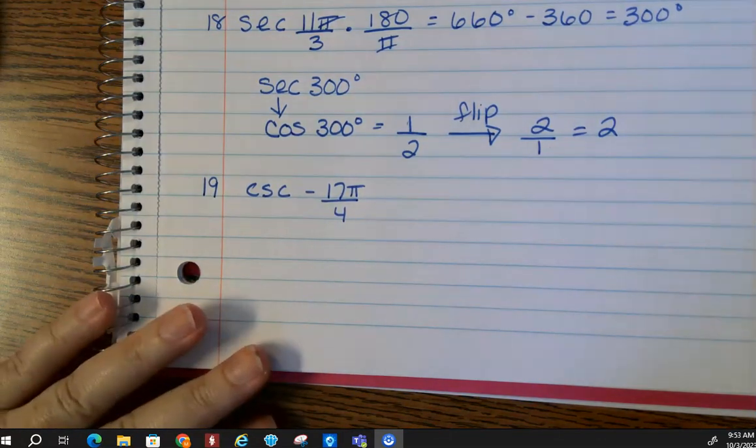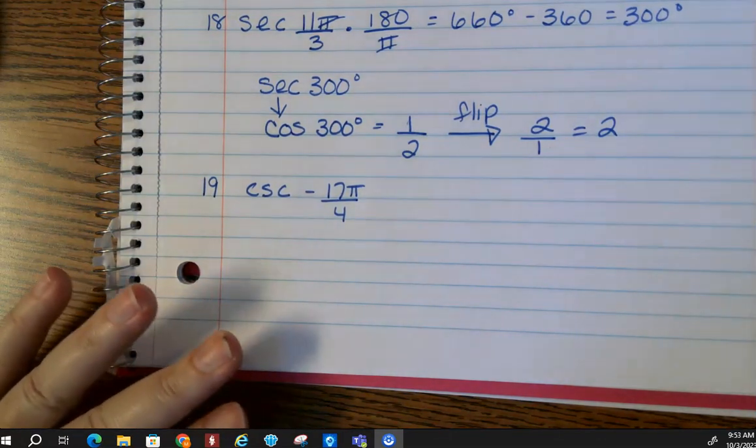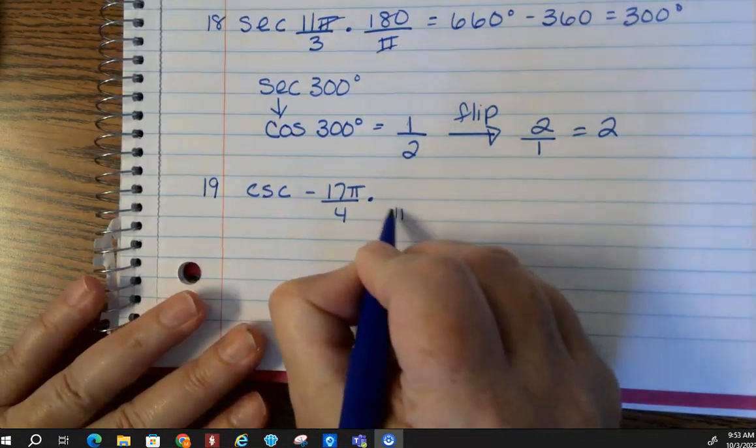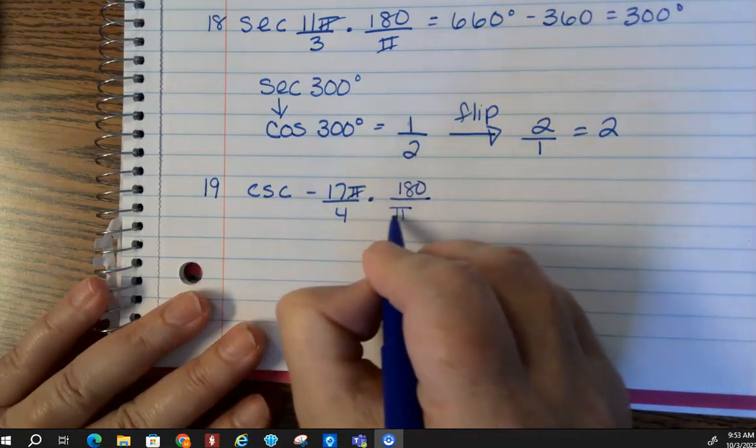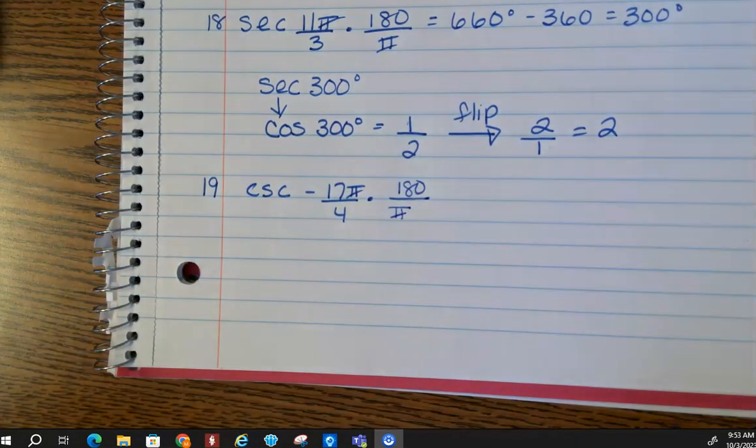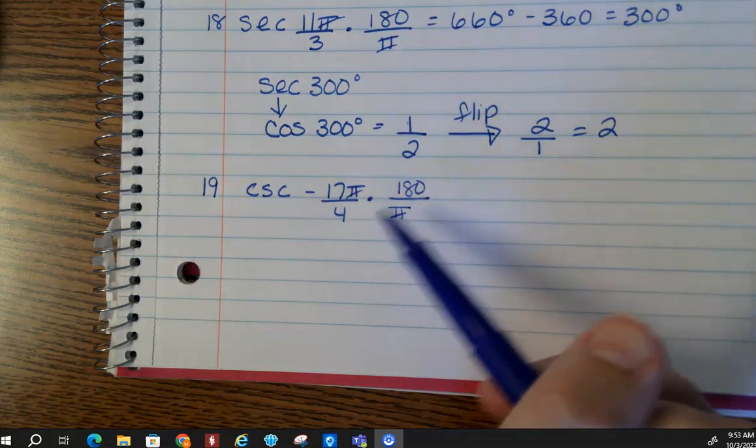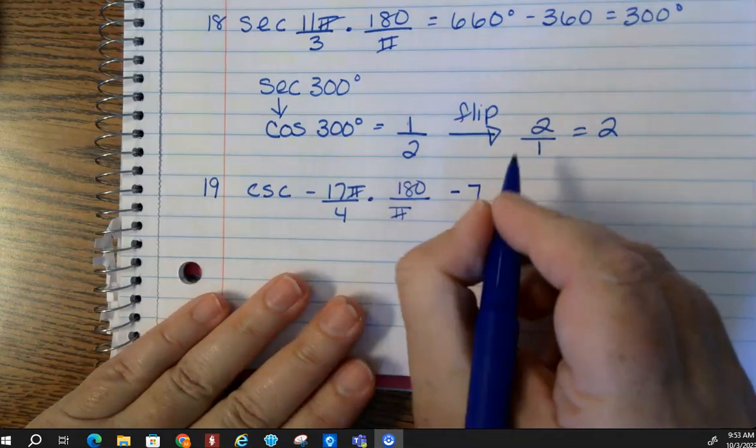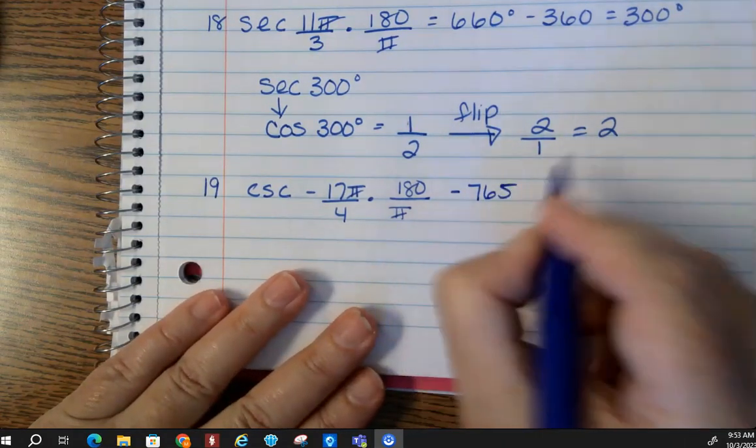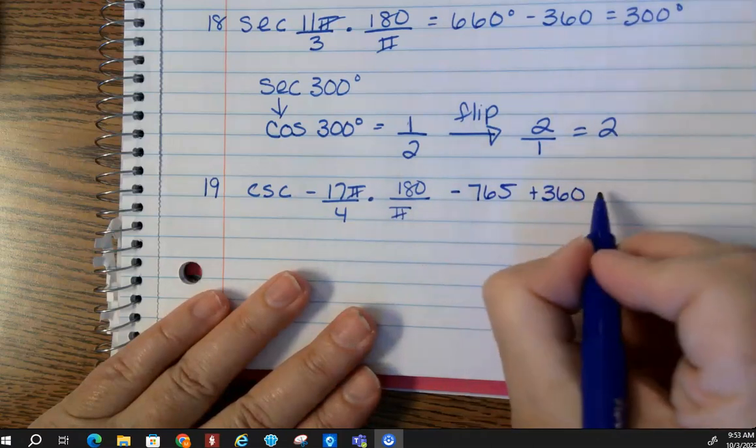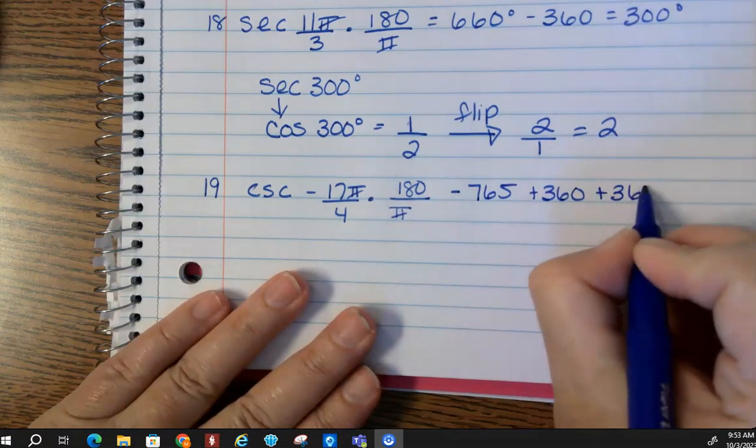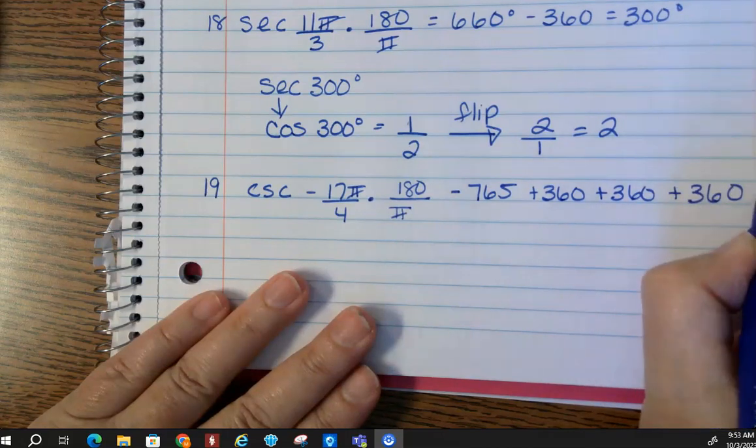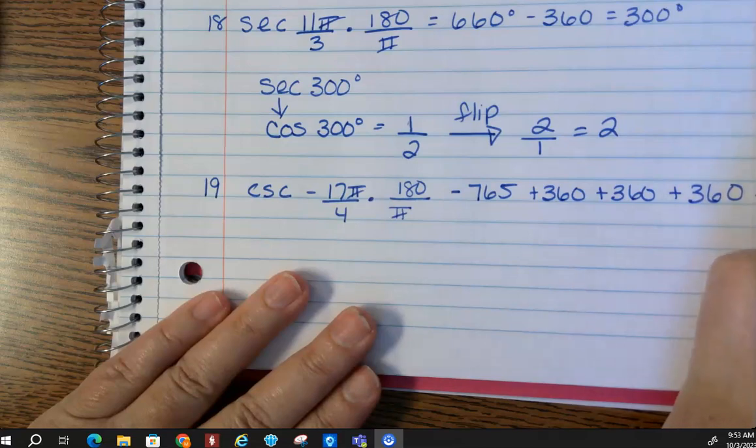Okay, step 1. Step 1, we've got to convert. So pi on the bottom, 180 on the top. Now if I multiply across the top, divide by 4, I got negative 765. We're going to keep adding 360. I think we had to do this one like 3 times, approximately, and I got 315 degrees.